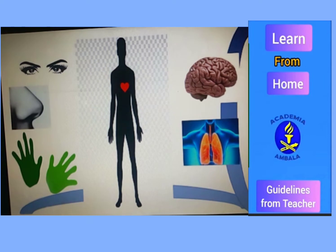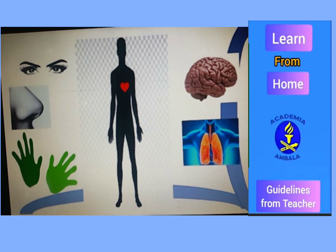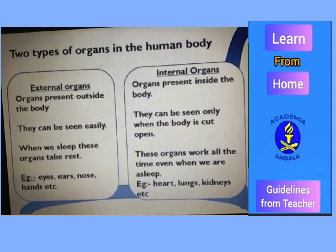And just look at these organs which are on the right hand side, like your brain, your lungs, your heart — you have never seen these organs. You have just seen their picture or videos, because they are present inside the body and can be seen only when the body is cut open. External organs are present outside the body; internal organs are inside the body. External can be seen easily, whereas internal can only be seen when the body is cut open.